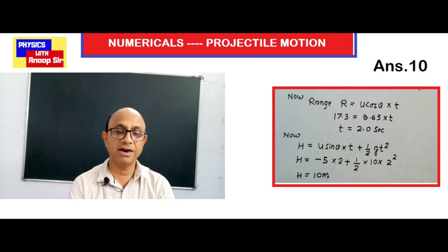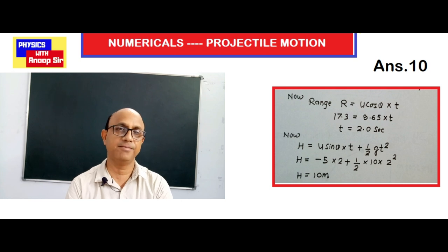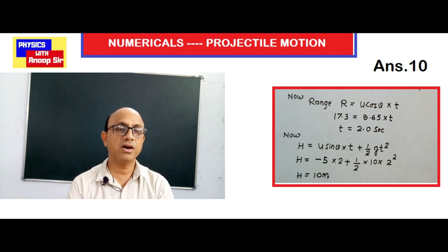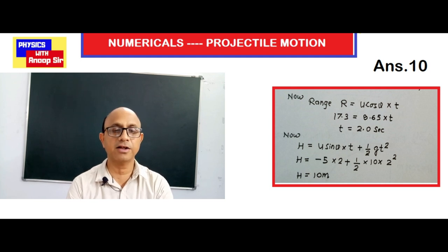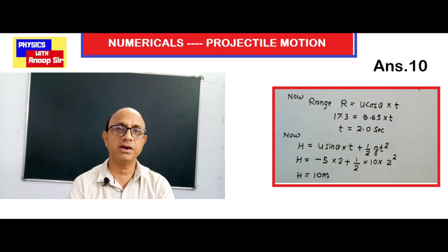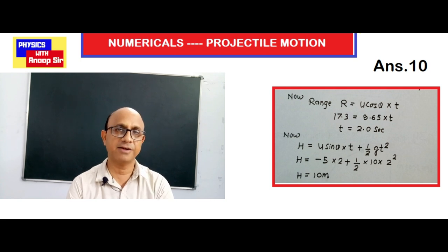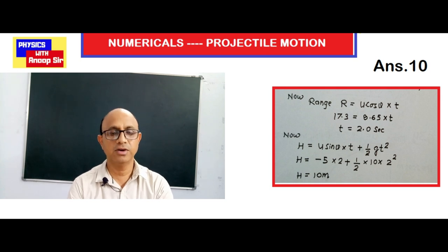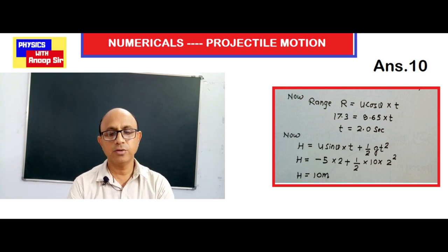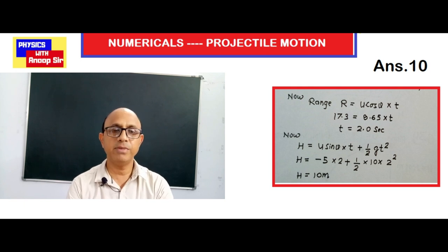Now using h = ut + ½gt² with u replaced by u sinθ taken as negative, because initially the ball's vertical component is upward but we consider total time until it hits the ground: h = −5 × 2 + ½ × 10 × 2² = −10 + 20 = 10 meters. So the tower height is 10 meters.